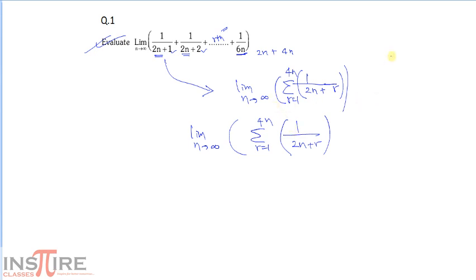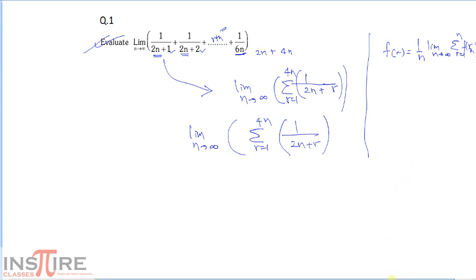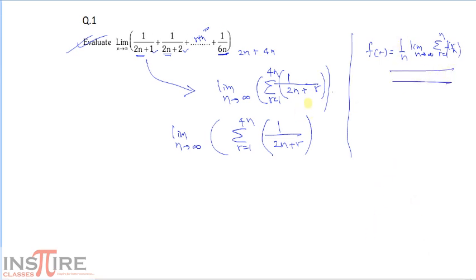We need to convert this to the standard form: (1/n) · f(r/n). Taking n common from the denominator: limit n→∞, (1/n) · sigma r=1 to 4n of 1/(2 + r/n). Now we put r/n = x and 1/n = dx, and convert sigma to an integral.